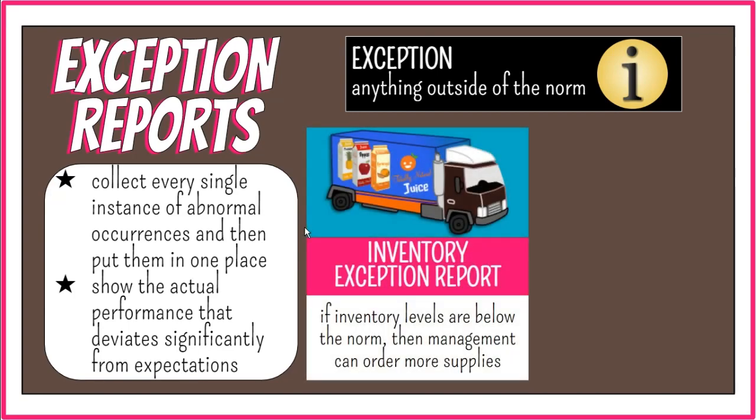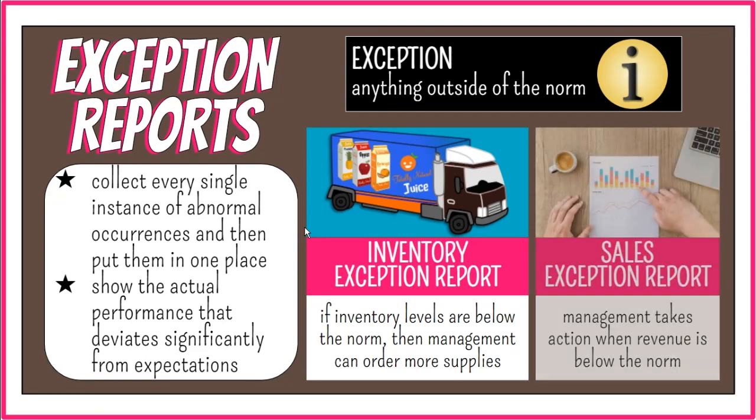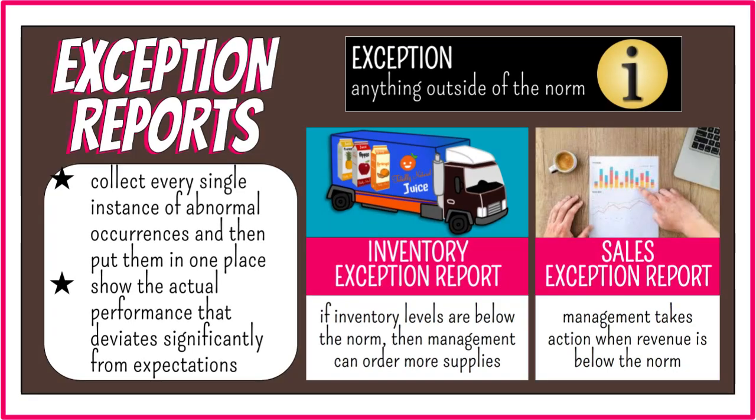For example, if the inventory levels are well below the norm, then management can order more supplies. Another example is when a business unit is making much less revenue than the norm — then management can take action.